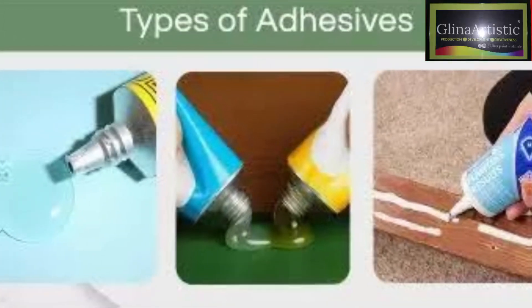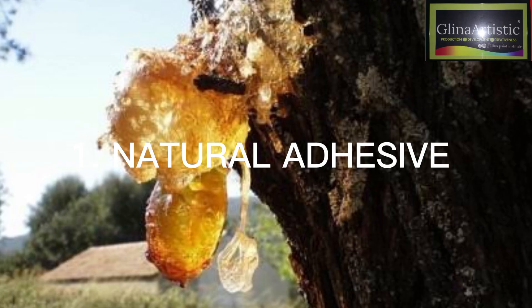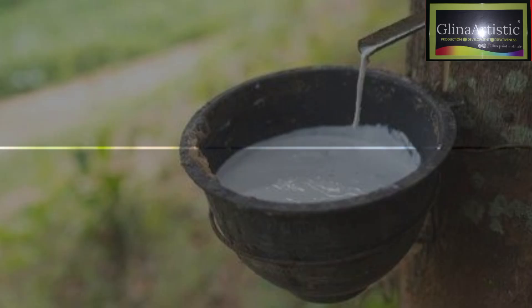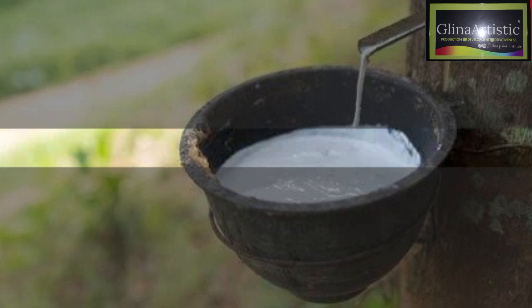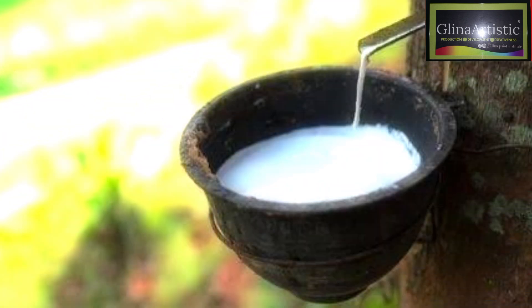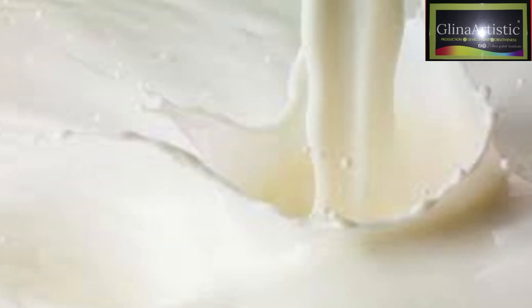Let's look at the types of additives. Number one: natural additives. This type is derived from plants and animals. Examples are starch glue, animal glue, and we have the casein glue from milk.